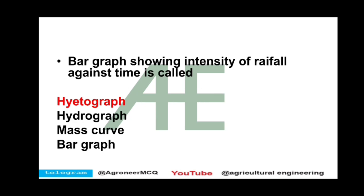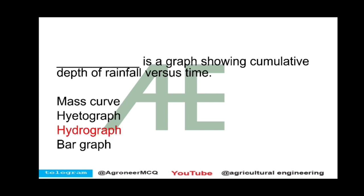Practice question: A bar graph showing intensity of rainfall against time is called a Hytograph. Another question: A dash is a graph showing cumulative depth of rainfall versus time — the answer is Hydrograph.